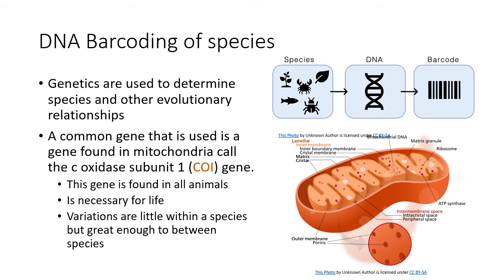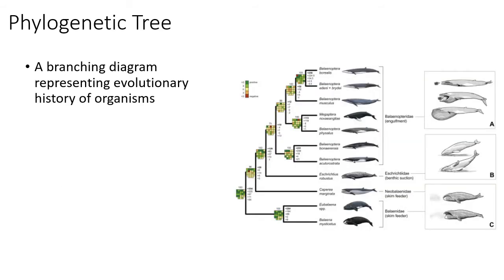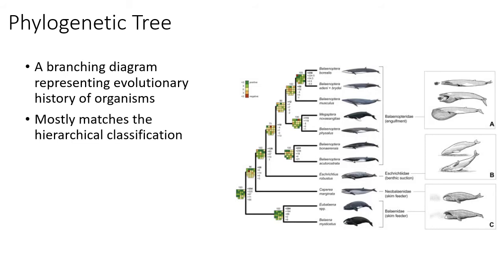You can look at those genetics to determine taxonomic groups. A phylogenetic tree of whales shows all the different whale species in the world as a branching diagram, where each branch point represents a common ancestor. Most branches also match the hierarchical classification we've assigned based on morphometrics, but not always, because some derived traits are shared, and if a trait evolved more than once that can cause confusion.